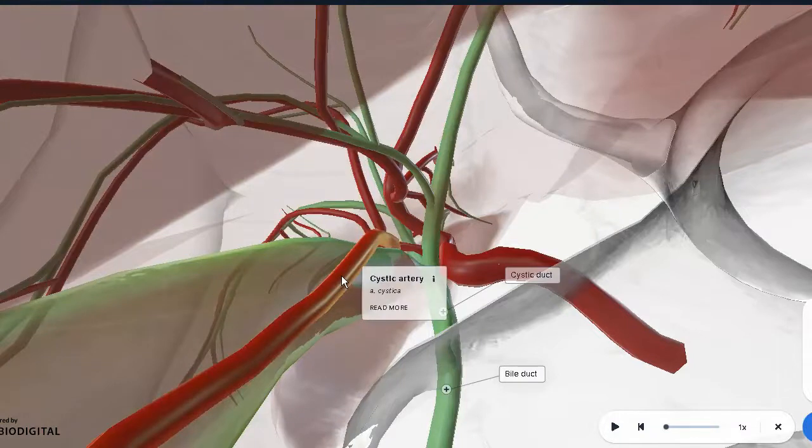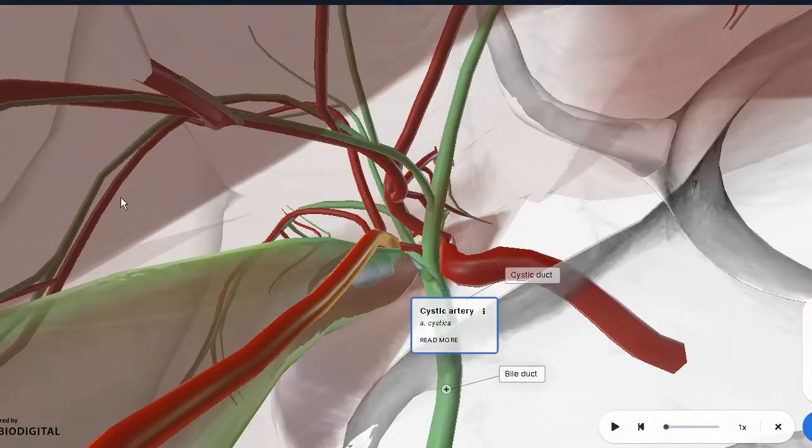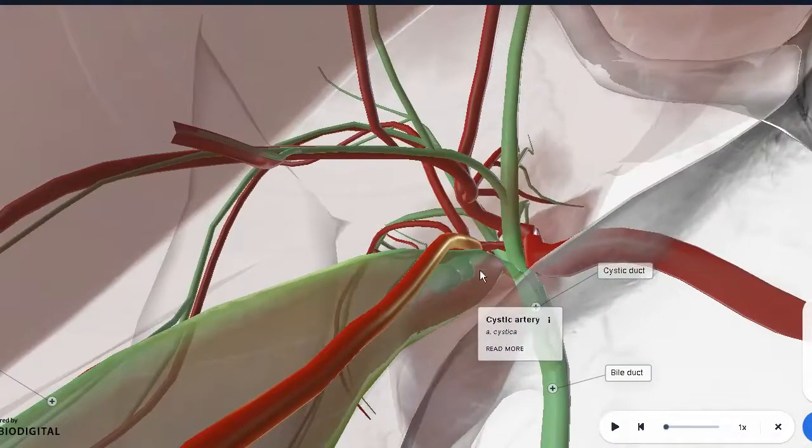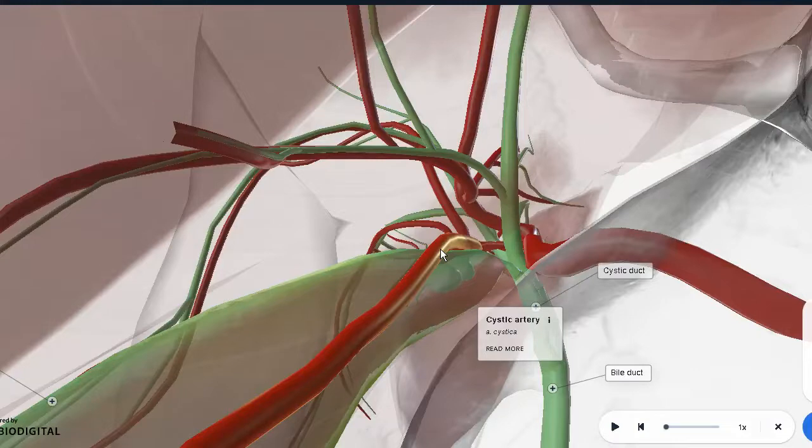Here you can see the cystic artery. Now the inferior border of the liver up above, the base of the gallbladder, and then the cystic duct on the right side. You have a triangle known as Calot's triangle. This is a triangle where you can find the cystic artery. The surgeon always has to find this artery before removing the gallbladder. Because a failure to ligate this artery or improper ligation can cause massive bleeding actually.